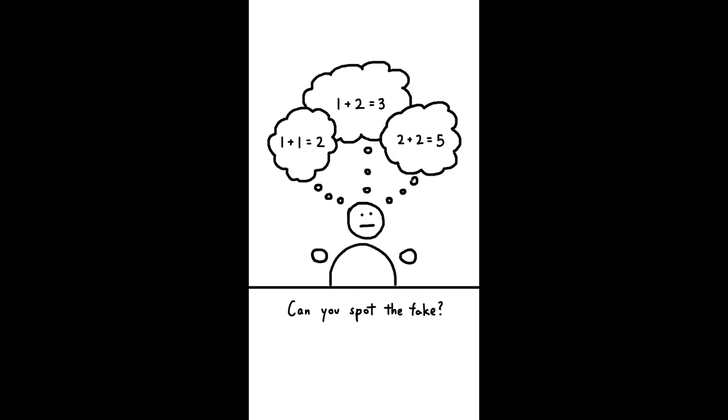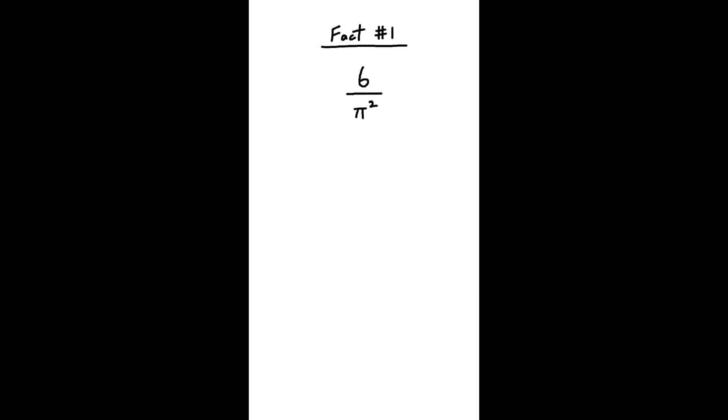Two truths and a lie, but with math. Can you spot the fake? First, 6 over pi squared is the probability of two random numbers being coprime, which means having no common factors.